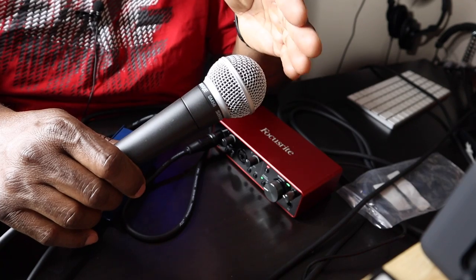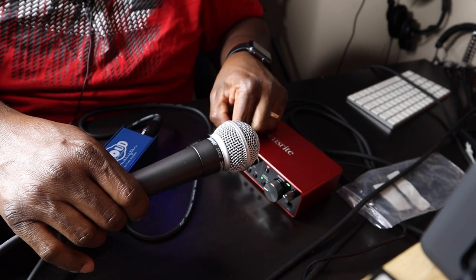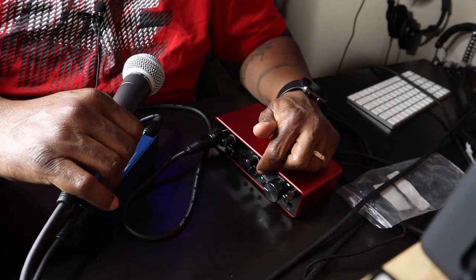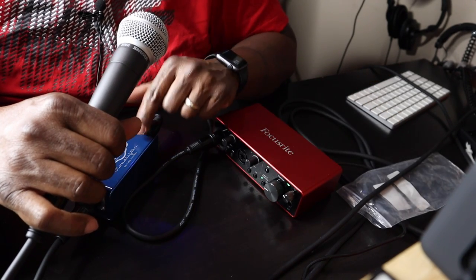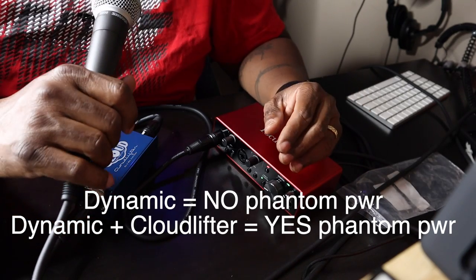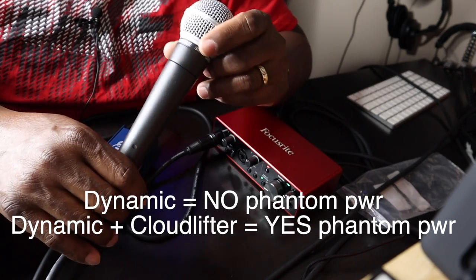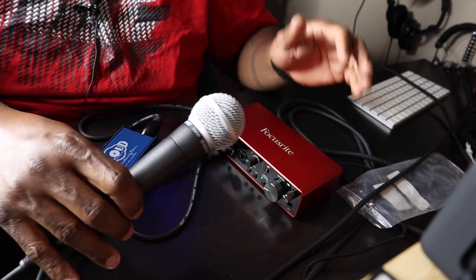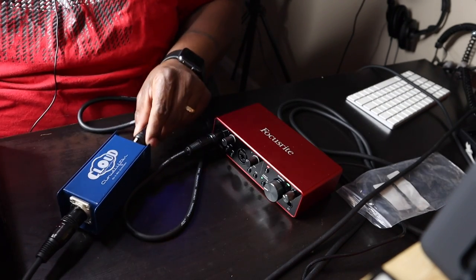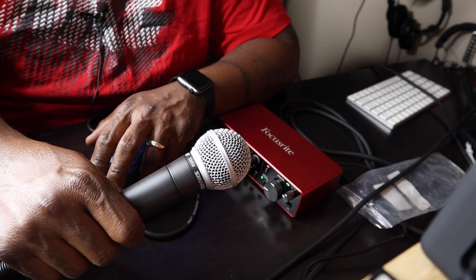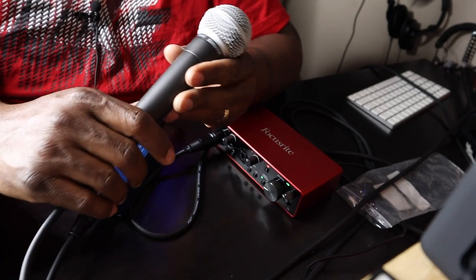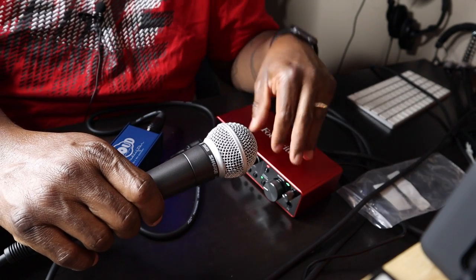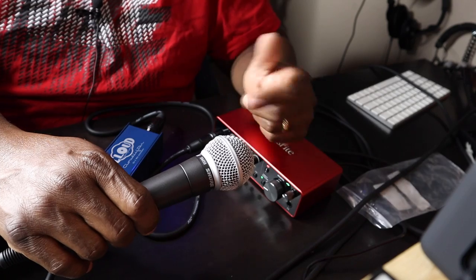This will make your dynamic microphone a lot louder so you won't have to skyrocket the gain on your interface. As for phantom power with dynamic mics — I believe you don't need it, but I'm not 100% sure. Just check the manual to be safe. Some preamps are powerful enough that you don't even need the cloud lifter, but with a Focusrite Scarlett, for the cleanest sound, I'd put the cloud lifter in there.